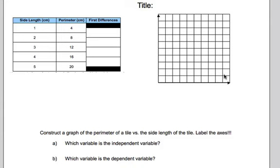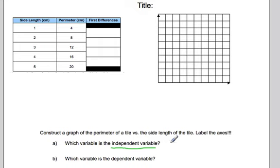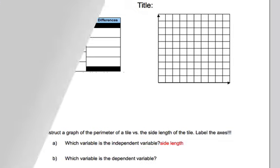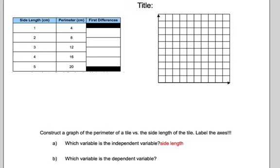Now the next question, you have to look at the table here and we're going to graph it. But first of all, we have to decide which is our independent variable. It's important to remember that our independent variable is the one that determines the value of the dependent variable. So the question here is: does side length determine perimeter, or does perimeter determine side length? The answer is that side length determines the value of the perimeter. So side length is the independent variable, and perimeter is the dependent variable.